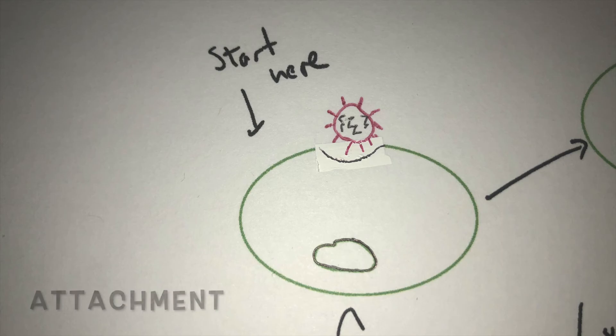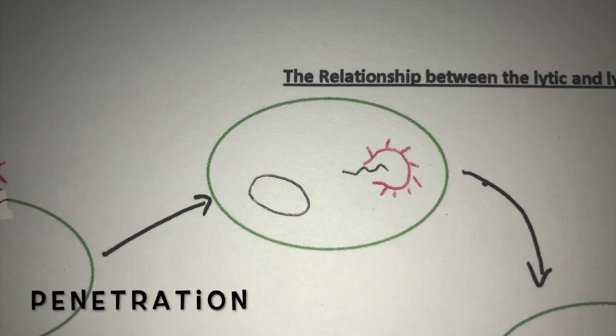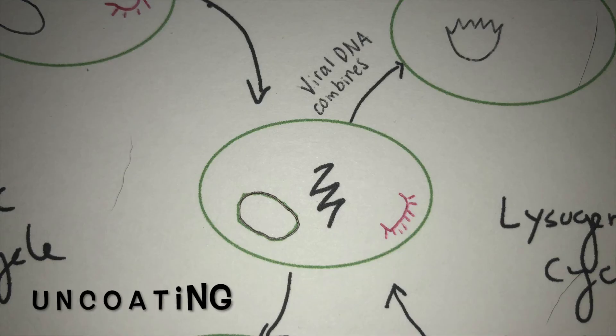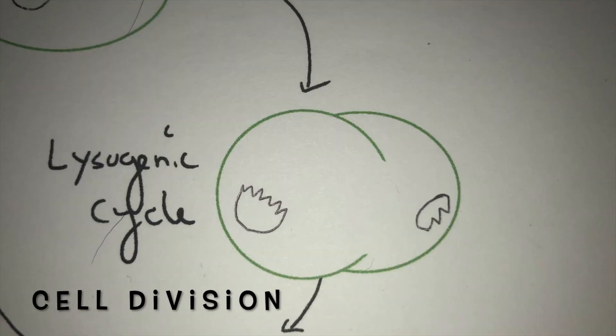Like the lytic cycle, the lysogenic cycle has the first same three stages: attachment, penetration, and encoding. The fourth stage is integration, where the viral DNA or RNA combines with the host cell's genetic information. The fifth stage is cell division, where the host cell splits to replicate itself.